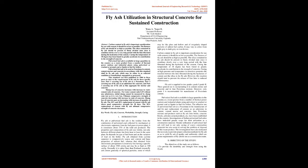Abstract. Carbon content in fly ash is an important consideration for use with cement; it should be as low as possible. The fineness of fly ash should be as high as possible. The silica contained in fly ash should be present in a finely divided state, since it combines slowly over a very long period with the lime liberated during the hydration of the cement.